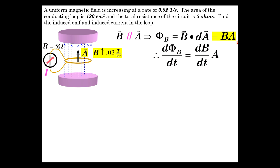So it's 0.02 teslas per second times 0.012 meters squared, or 120 centimeters squared. That gives us 2.4 × 10^-4 volts. That's the answer.